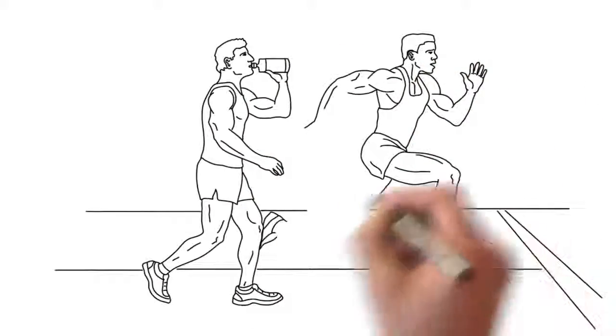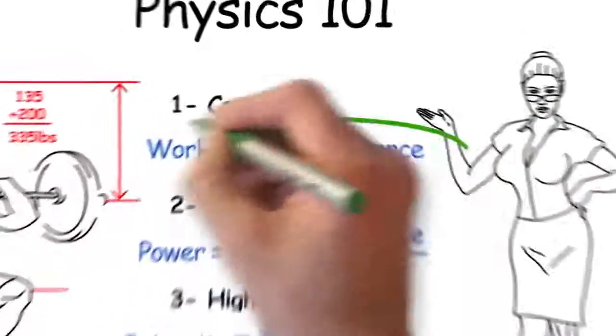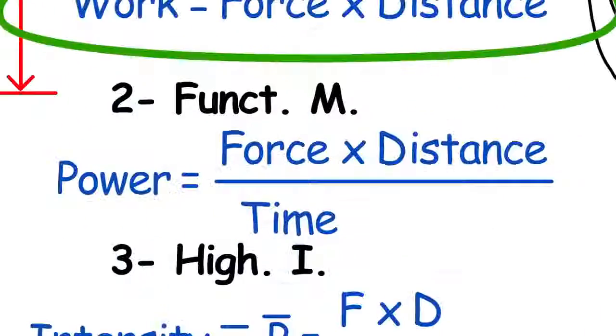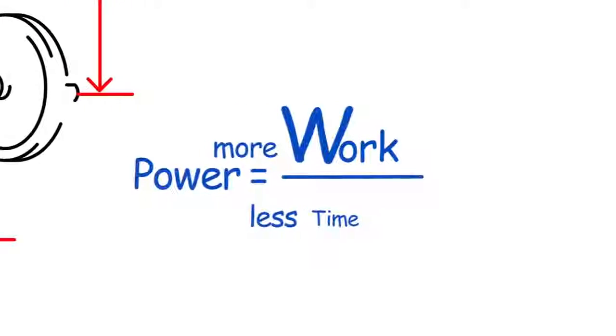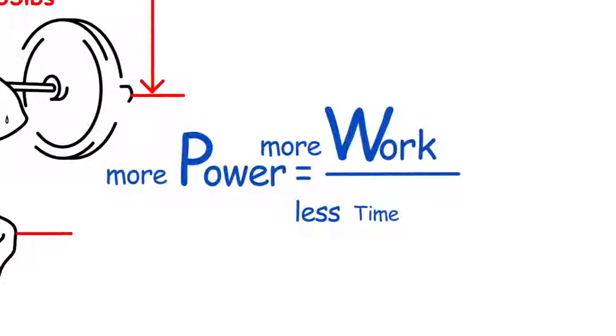Racing as fast as you can is harder and high intensity. Work is force times distance. Average power is work divided by time. The more work you do in less time, the higher the average power and the harder it is.